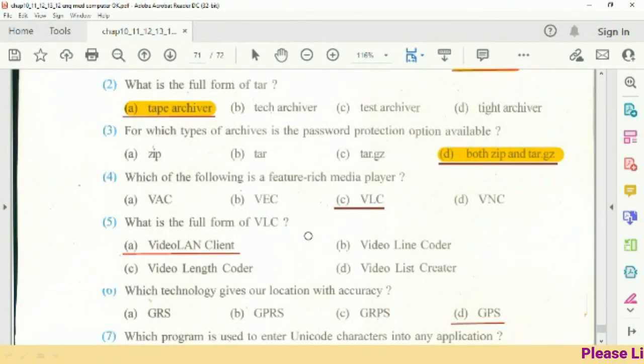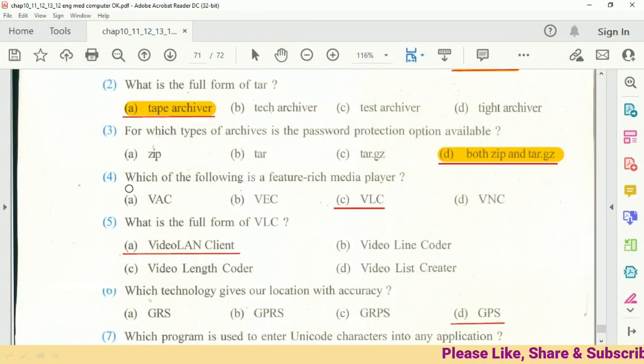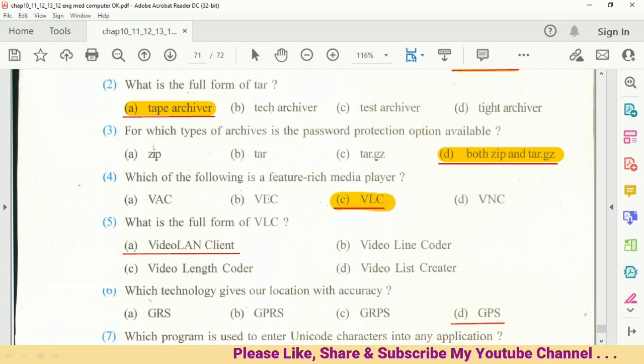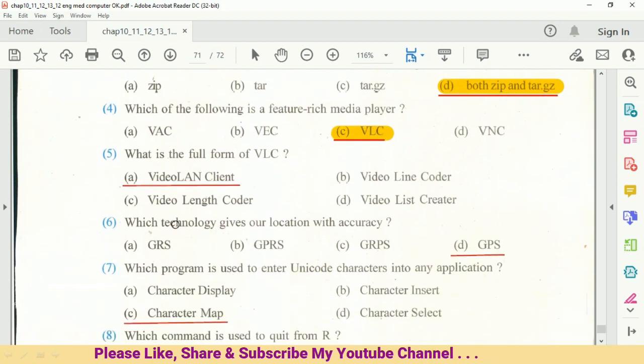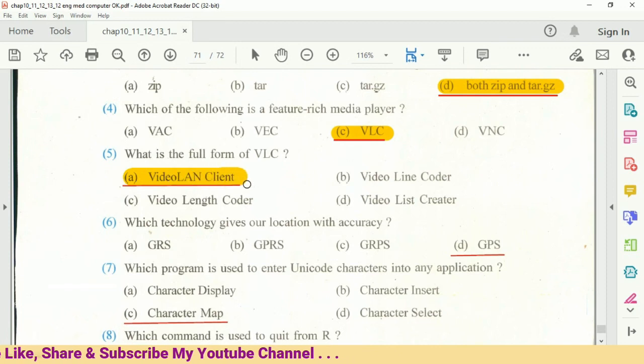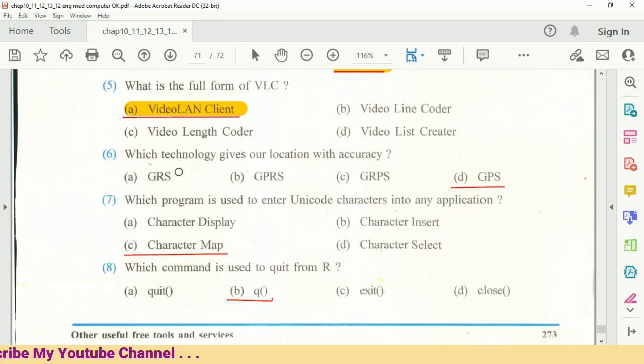Question number 4 is which of the following is a feature-rich media player? Video LAN Client, VLC, option C. Question number 5 is what is the full form of VLC? Video LAN Client. Which terminology gives a location with accuracy? That is GPS services.